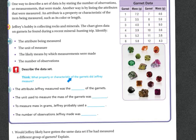So let's describe the data set. Think, what property or characteristic of the garnets did Jeffrey measure? So we have garnets, there's the garnets, mass, garnet mass.